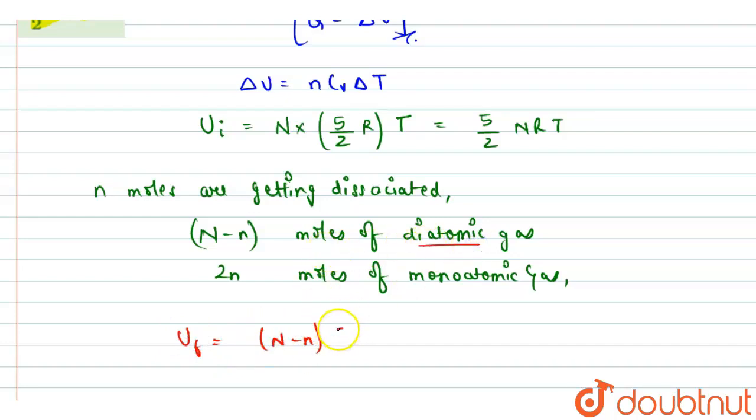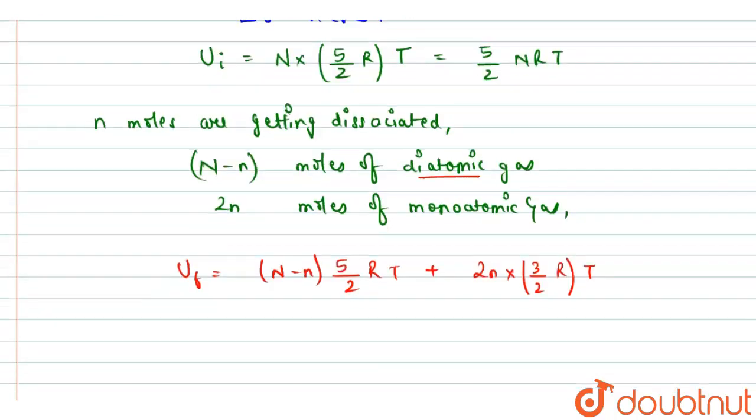So the final internal energy Uf we can write as: (N - n) moles of diatomic gas, and for diatomic gas we have 5/2 R times T, plus for monoatomic gas we can write 2n times—for monoatomic gas the degrees of freedom is 3/2—3/2 RT.